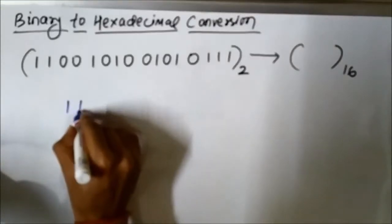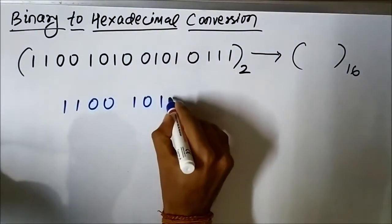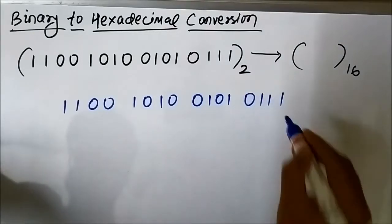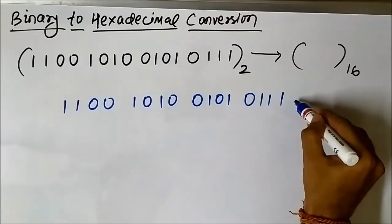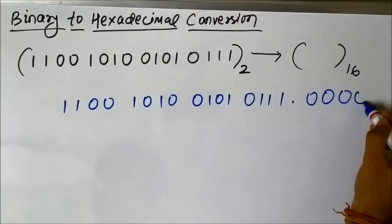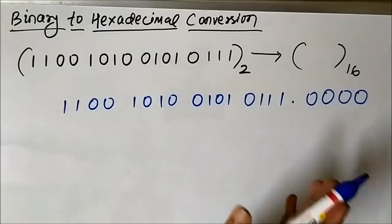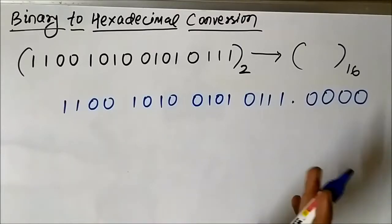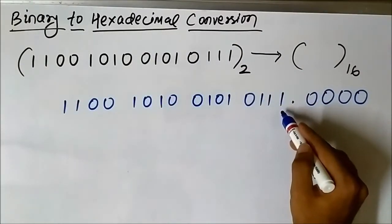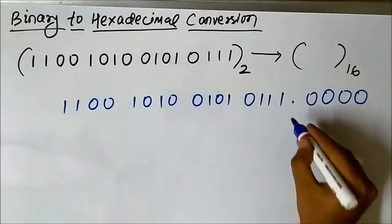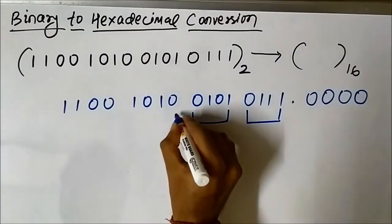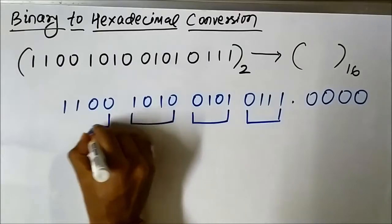Let us write the number again: 1 1 0 0 1 0 1 0 1 0 1 1 1. There is a hexadecimal point here but it makes no sense since there is nothing in the fractional portion. As I always say, whenever you form groups — either 3-bit or 4-bit — for the whole portion always start from the right, from the LSB bit, and proceed towards the MSB bit forming 4-bit groups. So starting from the right: this is one 4-bit group, this is another 4-bit group, this is another 4-bit group, and this is the last 4-bit group.